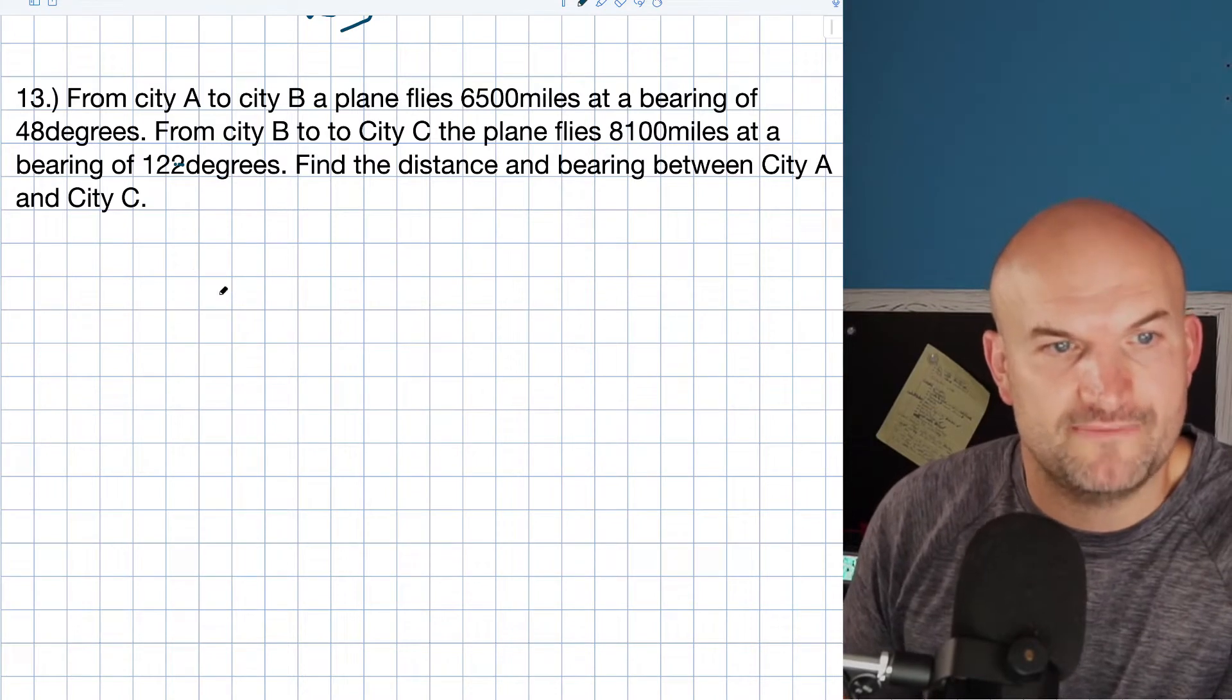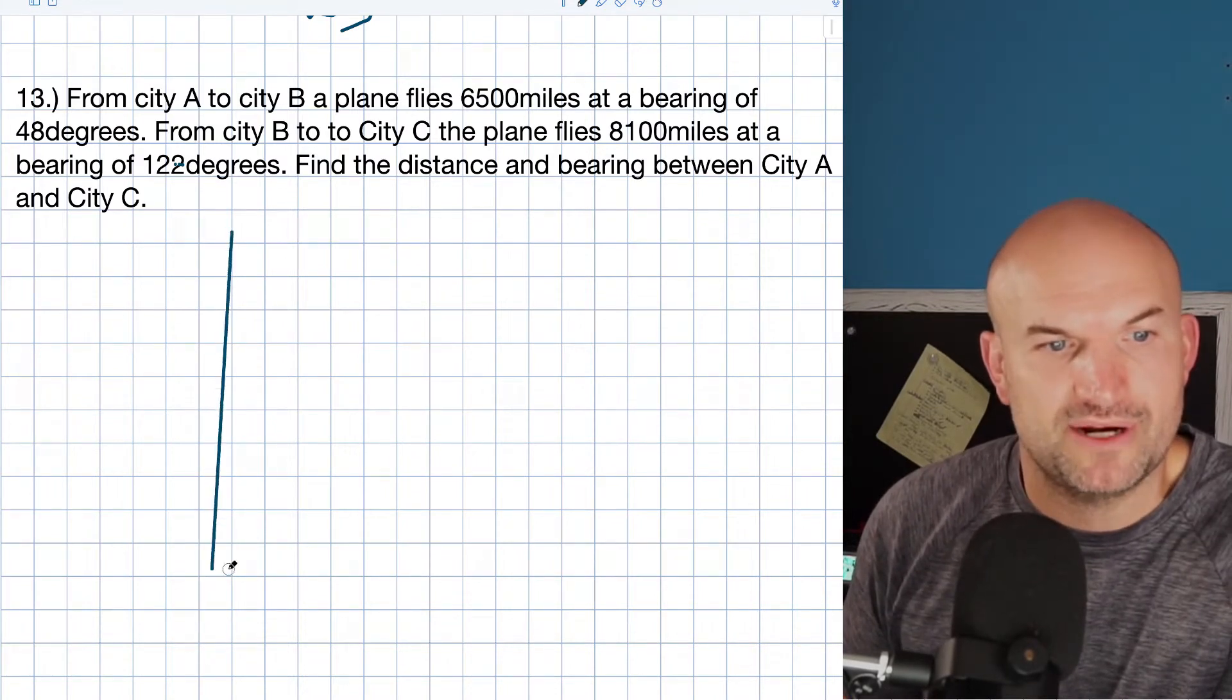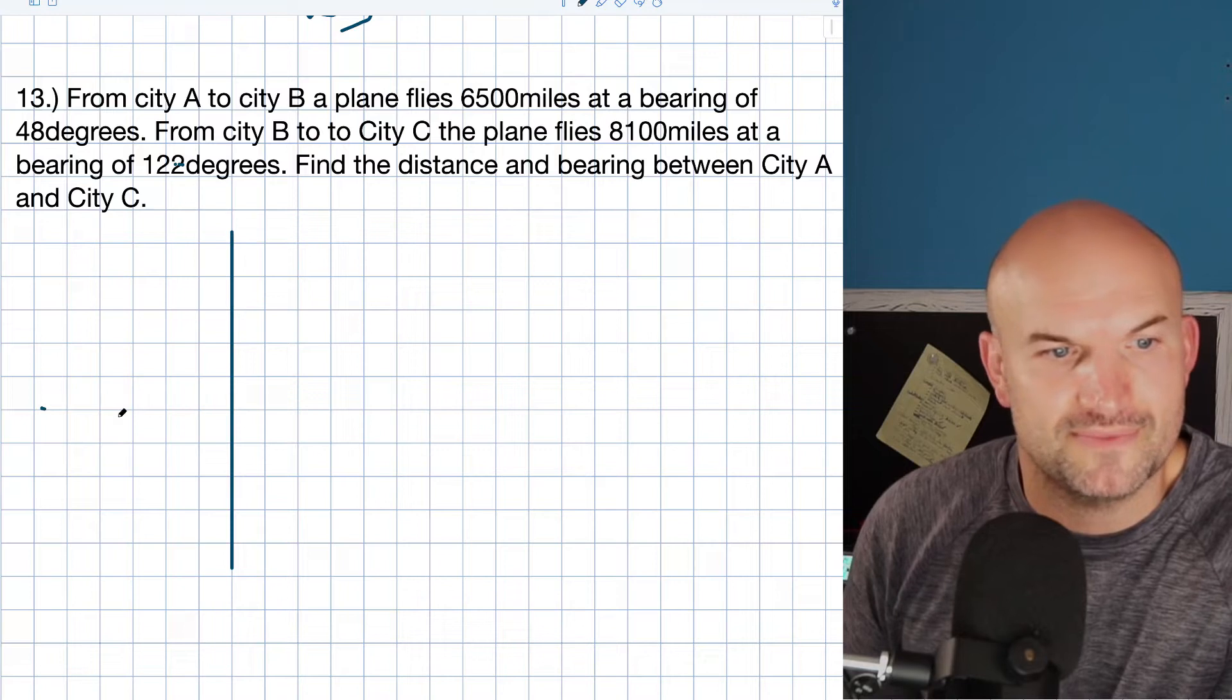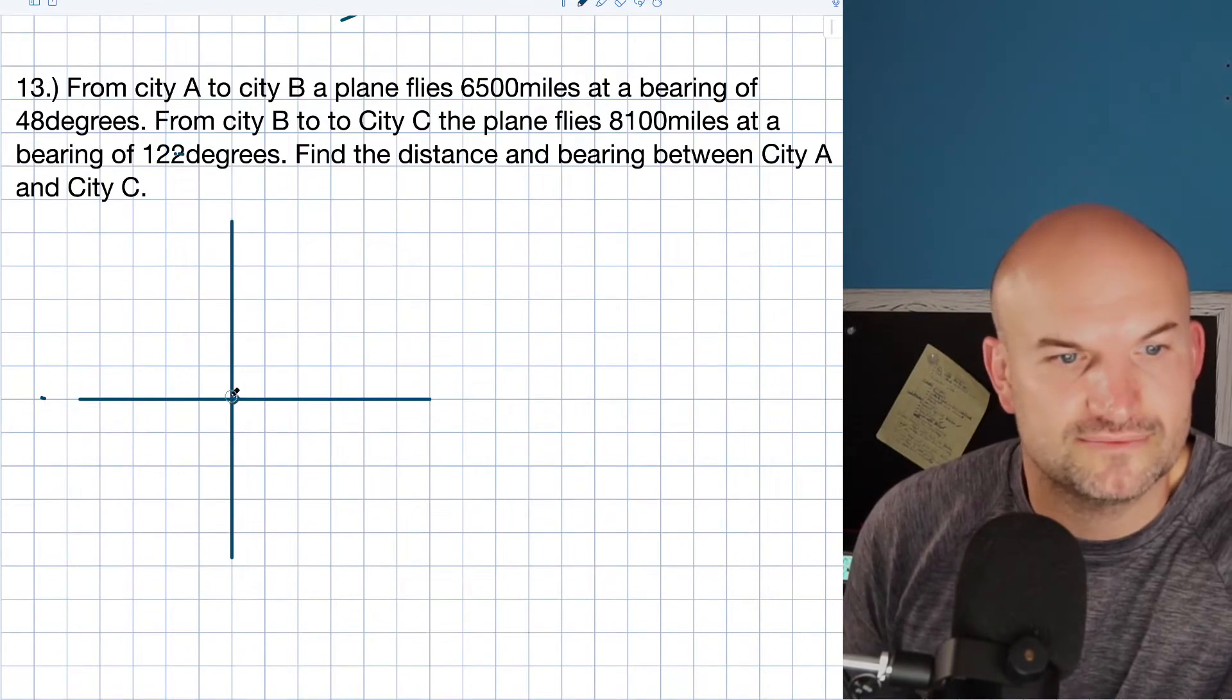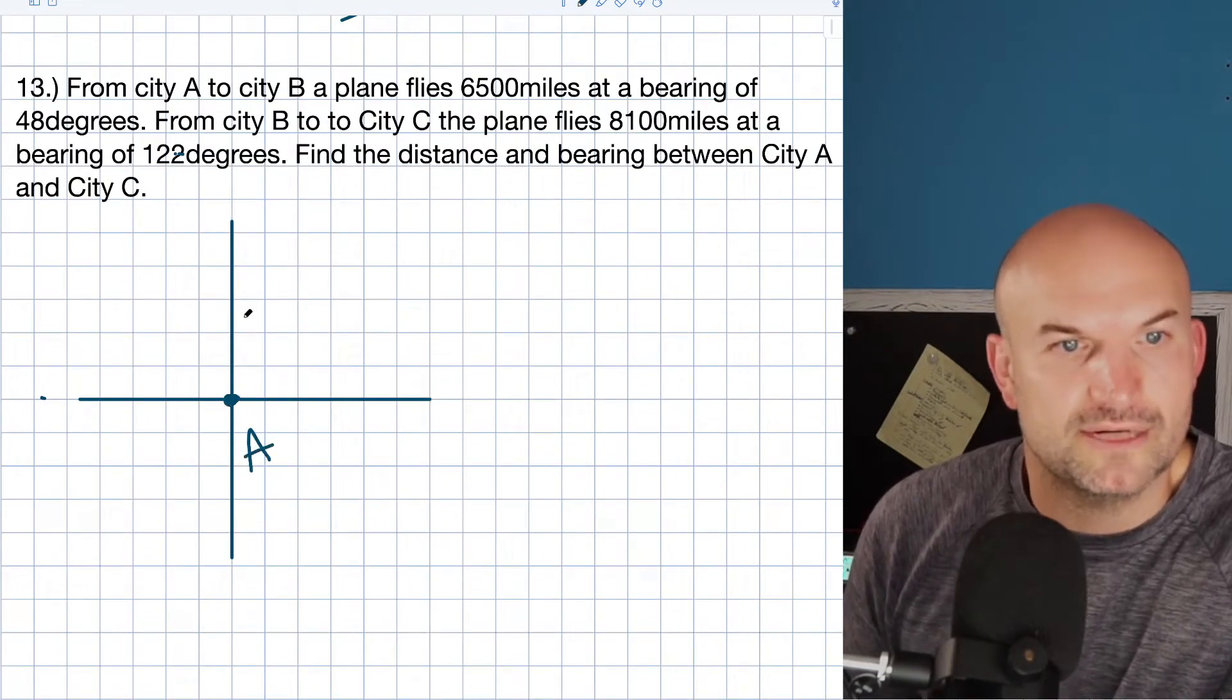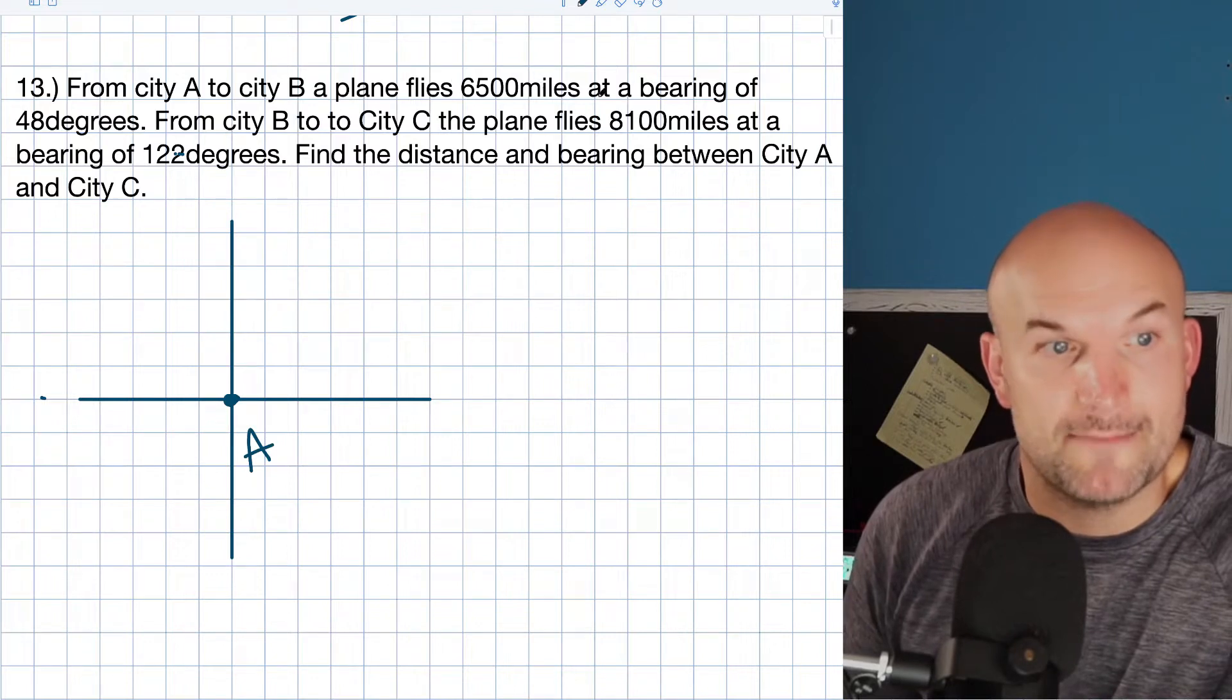So it says from city A to city B. What I'm going to do is we have bearings, so I'm going to draw an x-y axis. What I always like to do is kind of start - do I have room? I got a little room. Okay, so here's city A. Now we're going from city A to B, 6,500 miles at a bearing of 48 degrees.